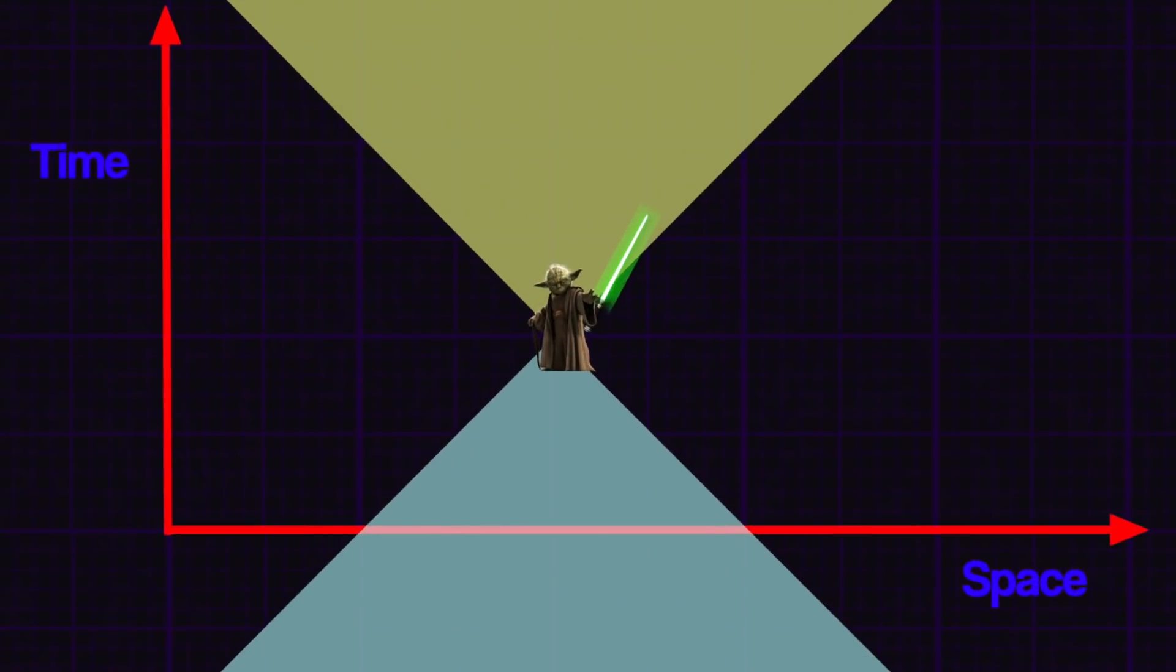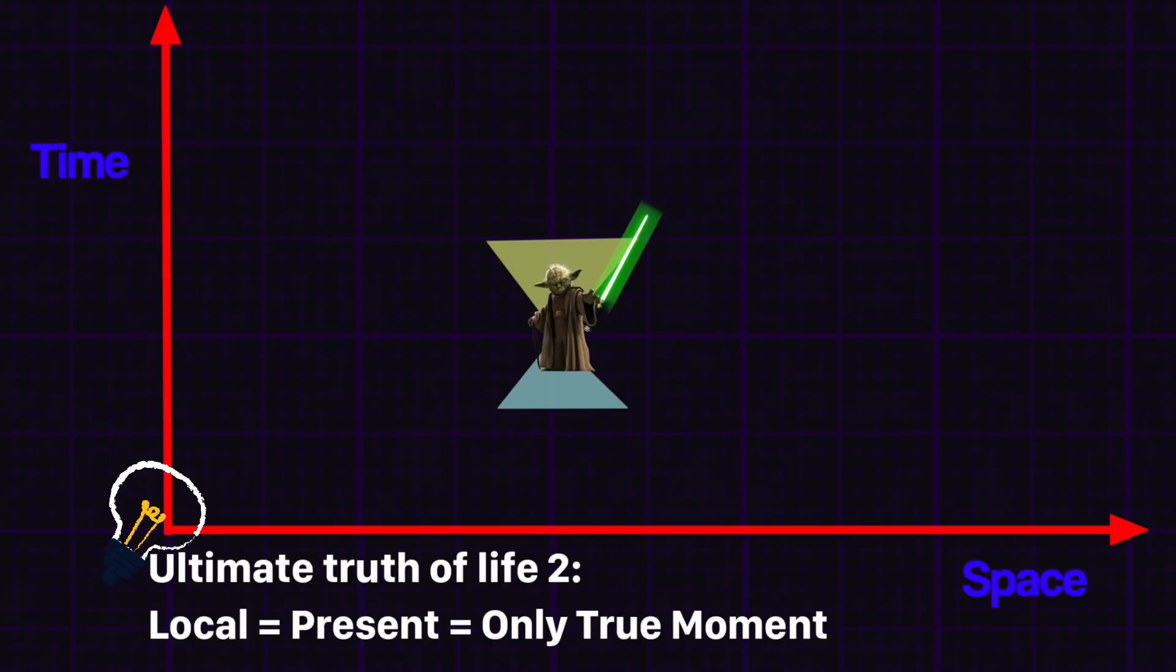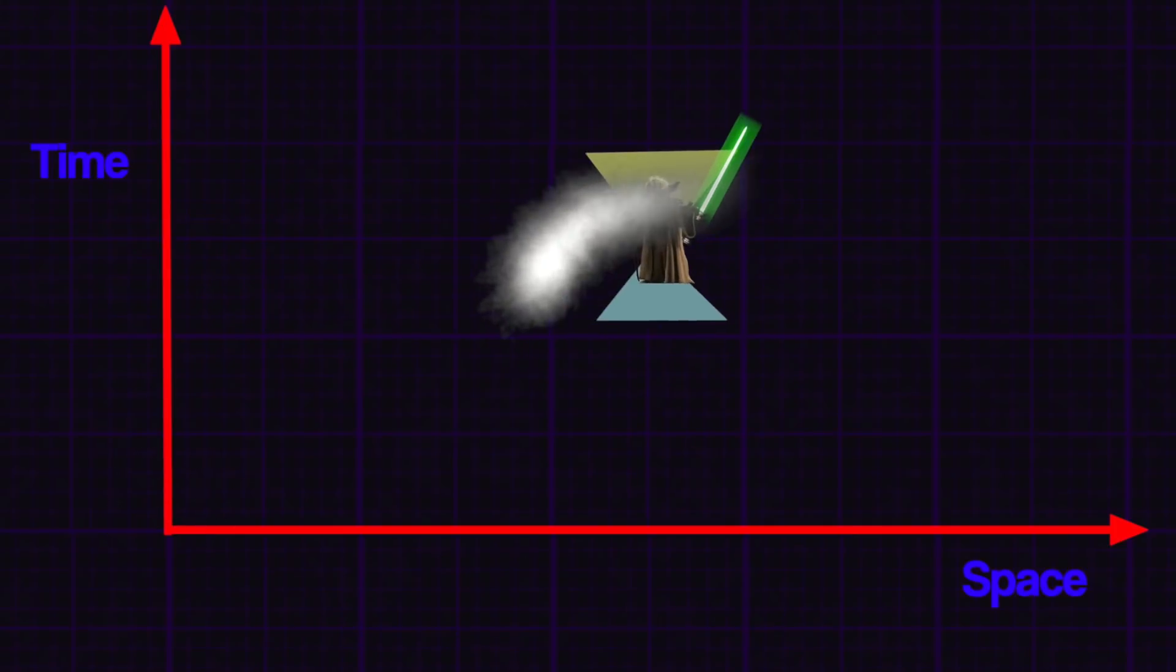Thus, we have local space-time for you. Thus, the diagram from earlier only showed predictions about a non-existent future and a non-existent past. All that matters is your local space and time which is attached to you.